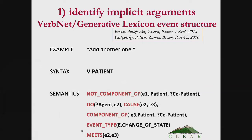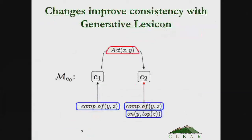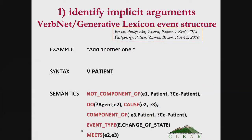For those familiar with VerbNet, this is a change from the previous set of semantic predicates associated with this class. We've been working to make VerbNet semantics more consistent with James Pustejovsky's dynamic event structure. He had a fairly specific definition for 'add': at the beginning of E1, Y is not a component of Z; at the end, Y is a component of Z. The agent X acts on Y, and he also added that at the end, Y is on top of Z. But that's really specific — that's only true for the tower context. In fact, if Y is a component of Z, can it also be on top of Z? You could have a world where those would be in conflict.